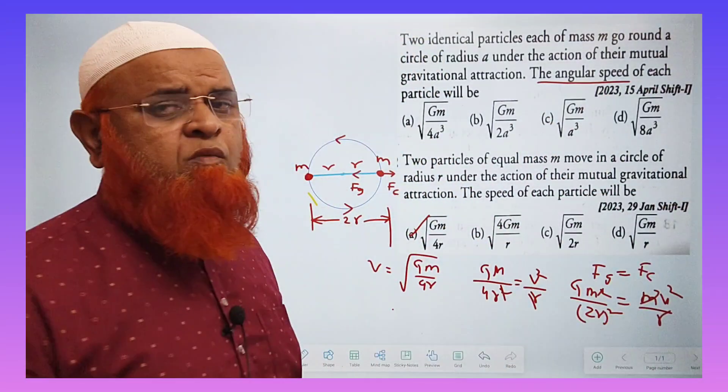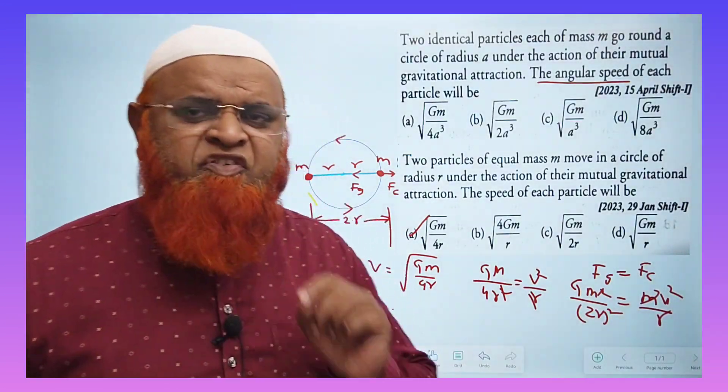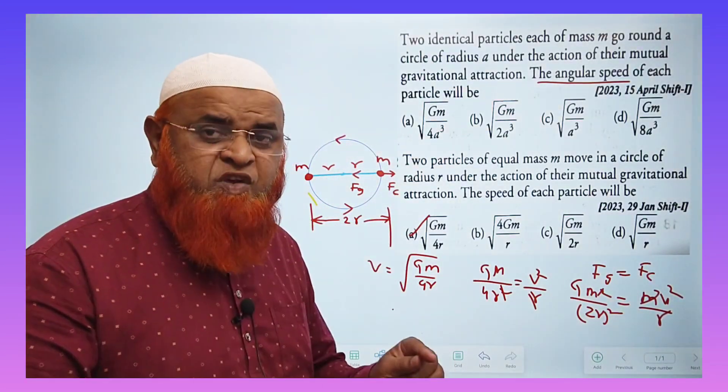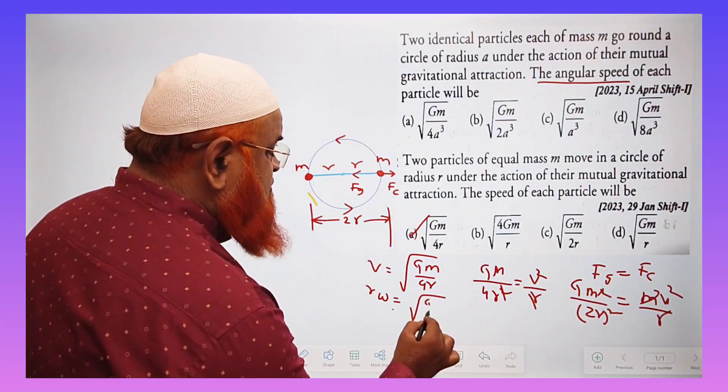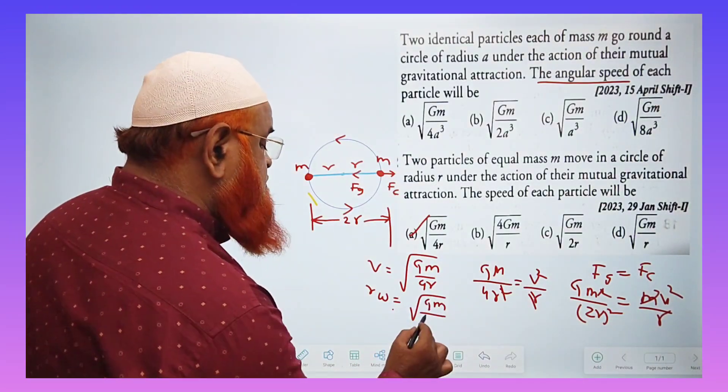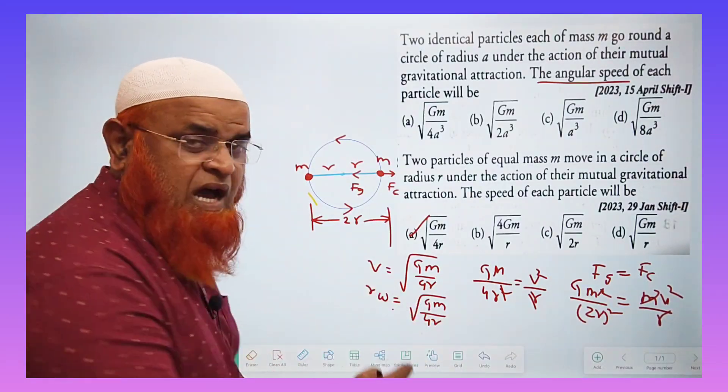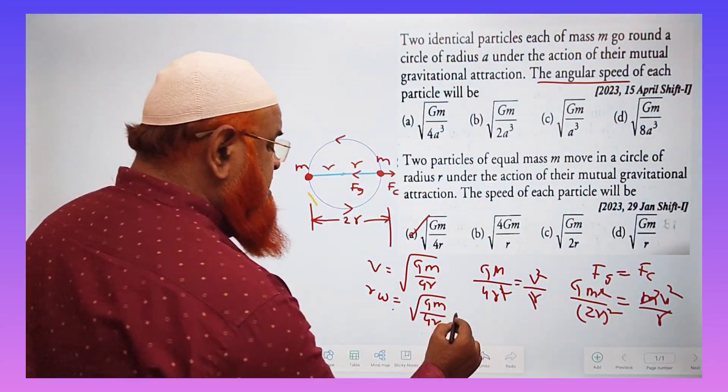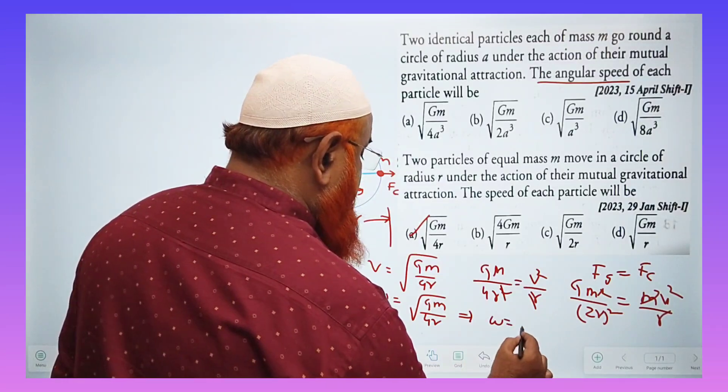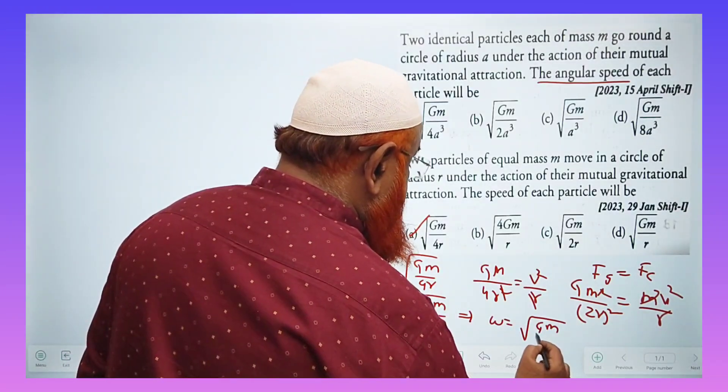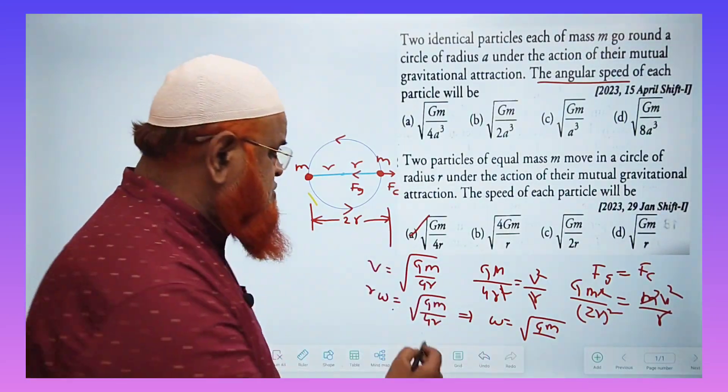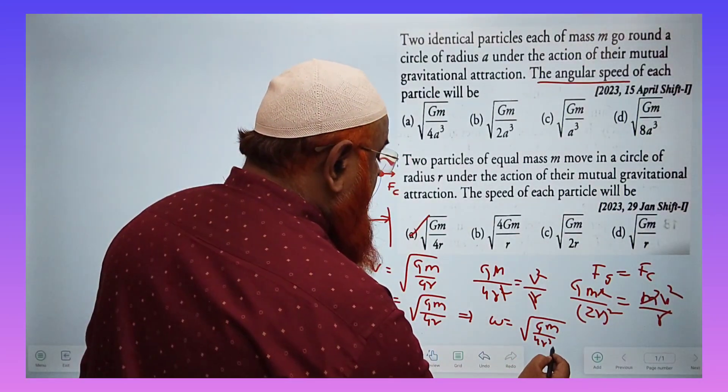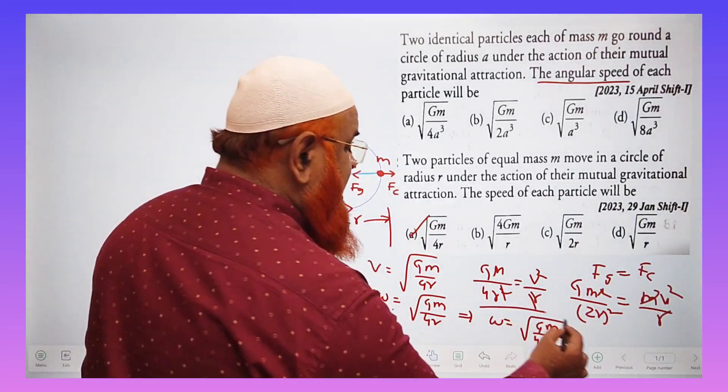But if he is asking to find out angular speed, then what are you going to do? A slight modification you have to do here. Instead of V, you have to write R omega. That's it. And you have to write Gm by 4R. That's it. This R, if you send inside, then it is going to become how much? Omega is going to be Gm by R. If you send in the square, it becomes R square. So, R square into R is going to become R cube. That's it. You got angular velocity.